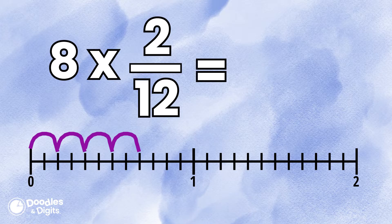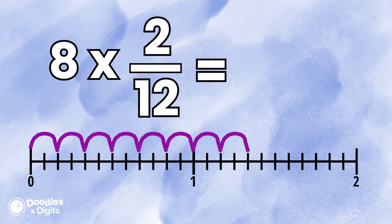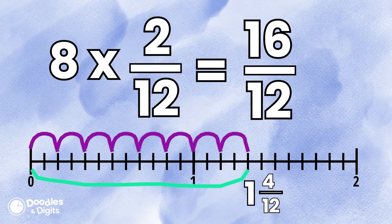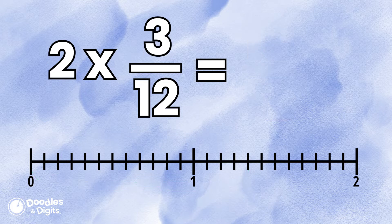All right, we're going to make eight jumps that are 2/12 each. Where do we land? We land on 16/12 or 1 and 4/12 in mixed number form. Let's try this one: 2 times 3/12.